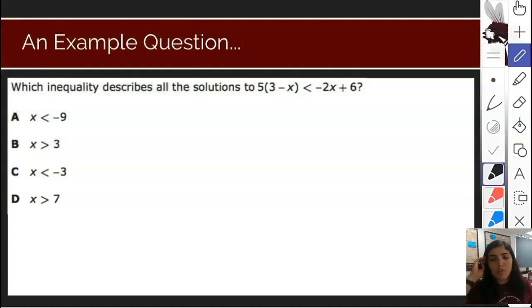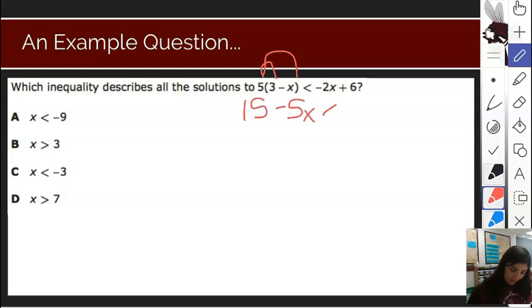An example of this question from a star test might ask: which inequality describes all of the solutions to 5(3 - x) < -2x + 6? We can handle this. We know we need to be able to distribute any number in front of parentheses. 5 times 3 is 15. 5 times negative x is negative 5x. And we bring down anything that we didn't have to distribute. Distribution step done.